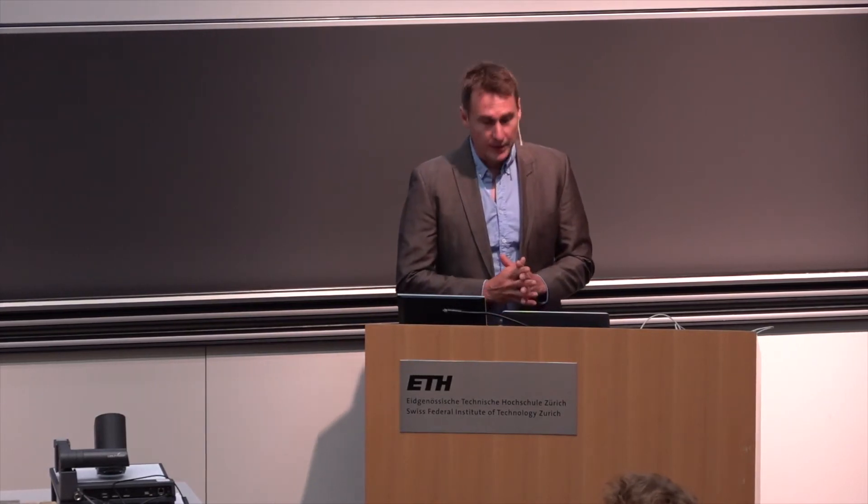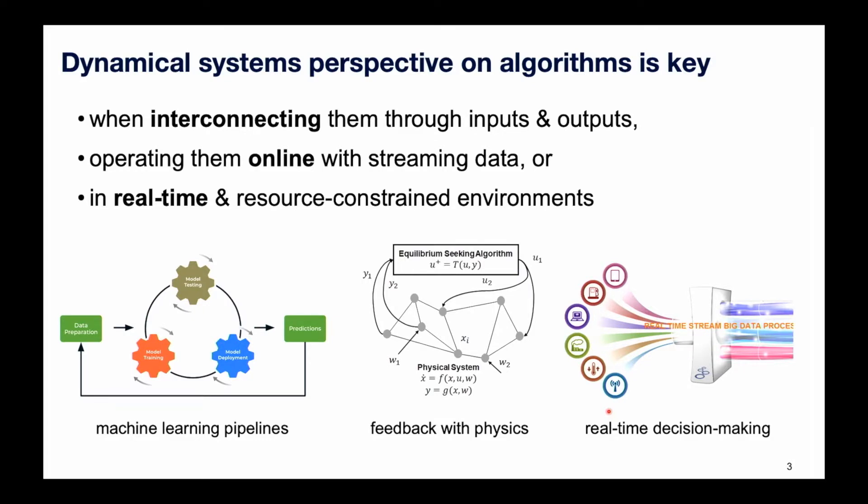This perspective of thinking about an algorithm as a discrete time dynamical system is key and enables you to do things you couldn't do otherwise. It is relevant whenever you want to interconnect algorithms — using inputs and outputs to interconnect algorithms amongst each other, as in machine learning pipelines where you have data pre-processing, PCA, conditioning, and so on — or as with the Kalman filter, interconnecting the decision-making algorithm with a physical system, or any sort of online optimization for control such as equilibrium seeking.